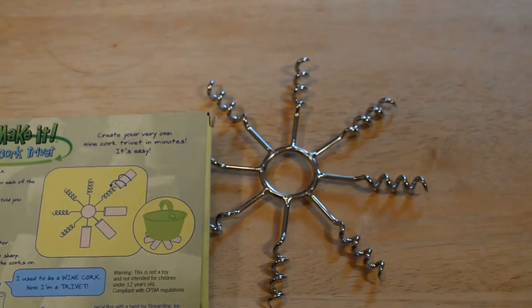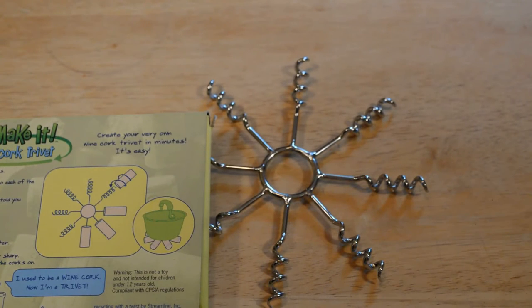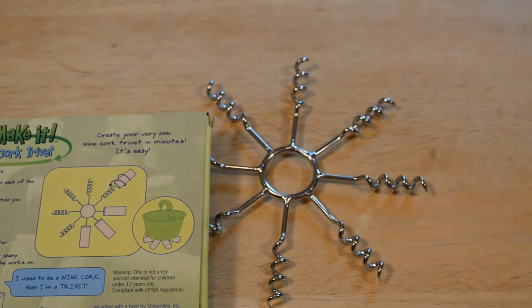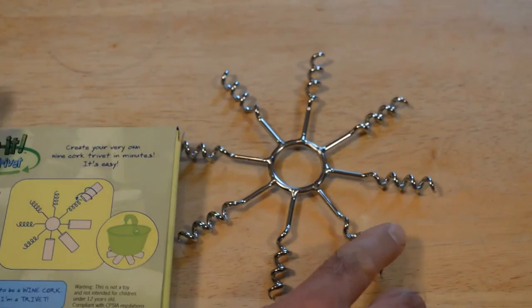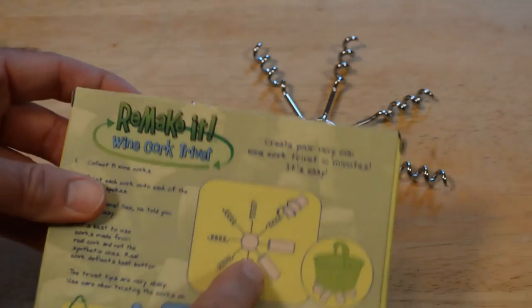Remake It Wine Cork Trivet, designed by Replayground at replayground.com, streamlined incorporated. So you just collect eight wine corks, screw them on this thing like so. You can see the picture.